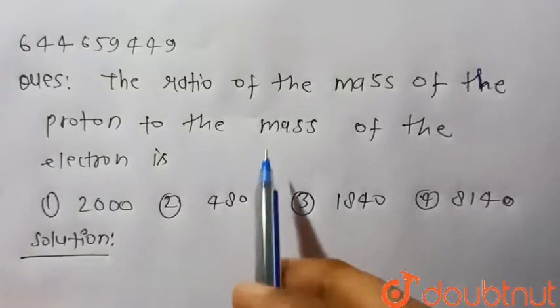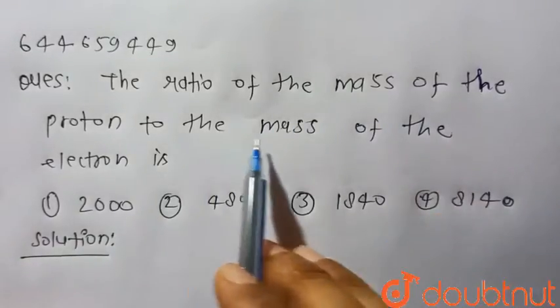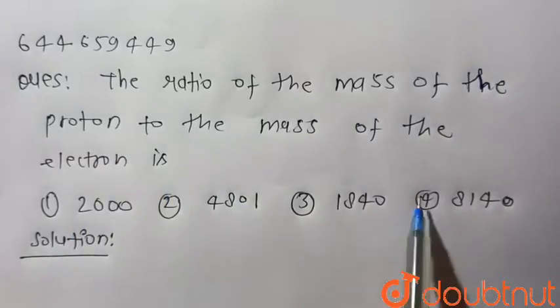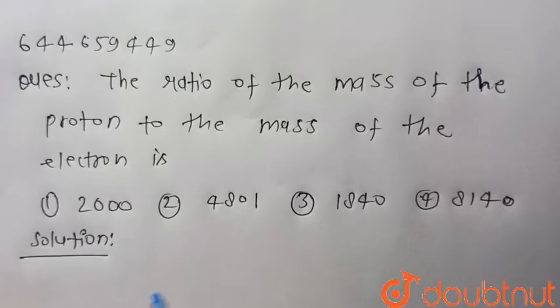Well everyone, consider the given question: the ratio of mass of the proton to the mass of the electron is. Four options are given, so we have to find which one is correct.